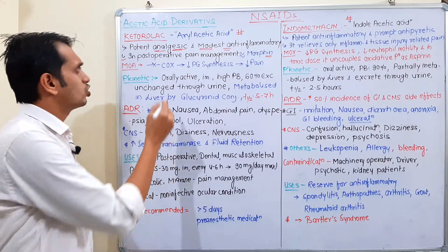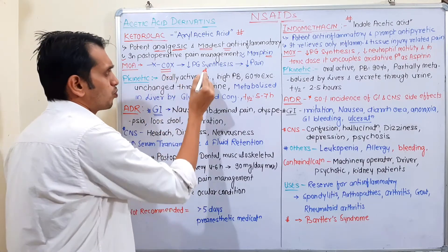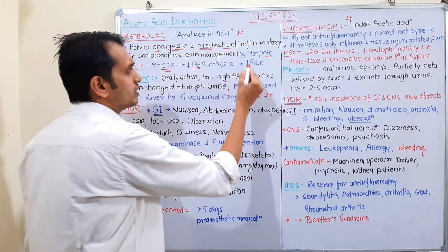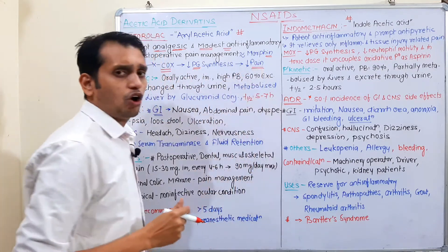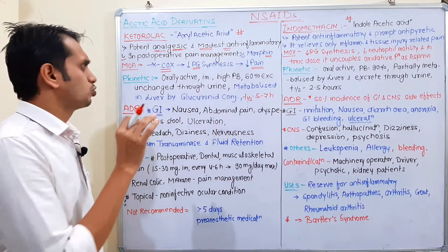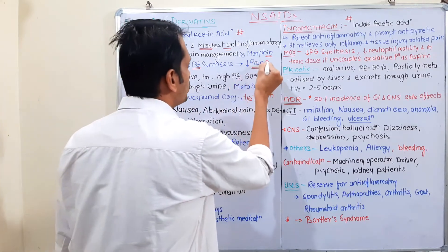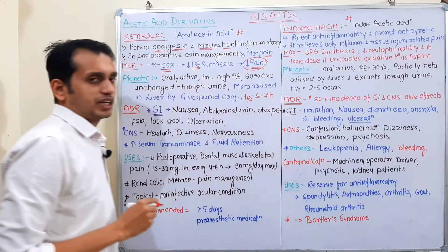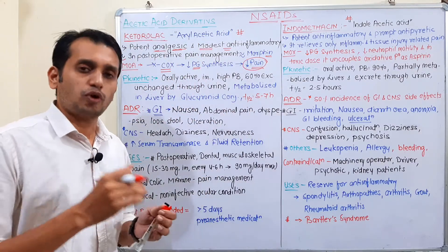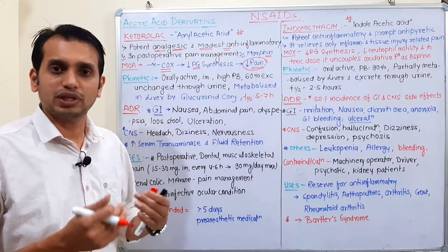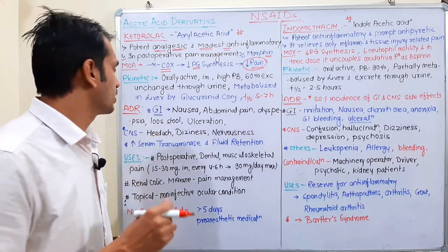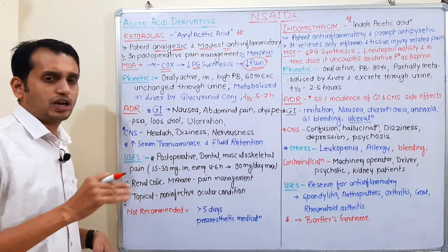Ketorolac works as a COX enzyme inhibitor. Due to inhibition of the COX enzyme, prostaglandin synthesis is inhibited, which decreases the pain pathway, inflammation process, and fever. As a result, pain is reduced, the pain threshold is increased, and pain perception is reduced.